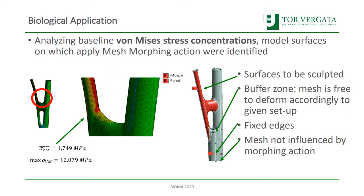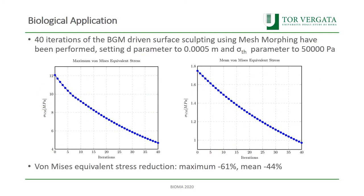Implementing mesh morphing coupled with the biological method, we studied how the shape of the tree trunk surface evolves over 40 iterations. You can see in this chart that the maximum von Mises stress, starting at 12 in the hotspot, goes down close to P4, and the average von Mises stress is also reduced during the simulation — achieving 60% less for the peak and 44% less for the mean stress.